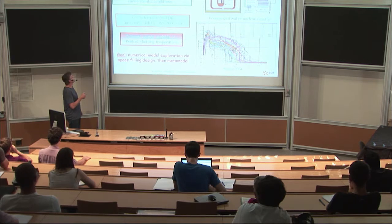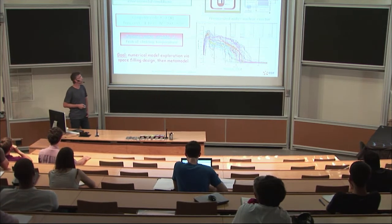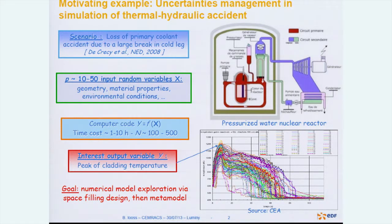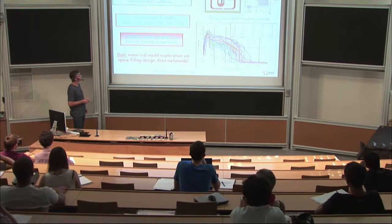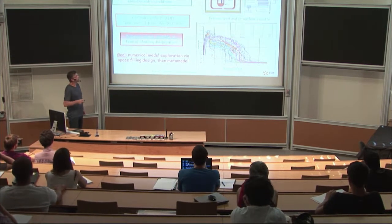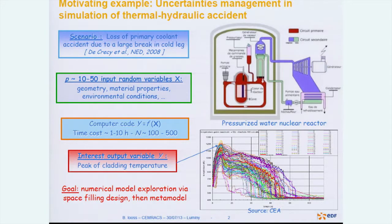If we have a break on the cold leg, the water drops out and we have a problem with the fuel temperature — we have to simulate what happens with this temperature. For such study, we have to take into account a lot of uncertainties on the inputs of the computer codes, like the geometry, the material properties, and the environmental conditions. We can deal with 10 to 50 input random variables.